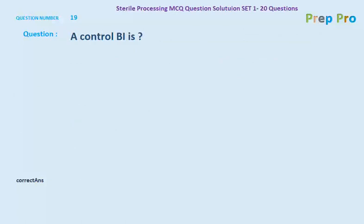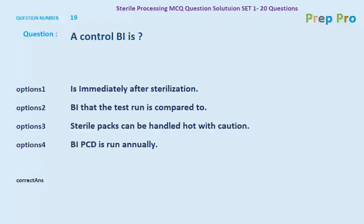Question number nineteen: a control BI is what? The options are: immediately after sterilization; BI that the test run is compared to; sterile packs can be handled hot with caution; and BI PCD is run annually. The correct answer is the BI that the test run is compared to — a control BI is the BI that the test run is compared to.